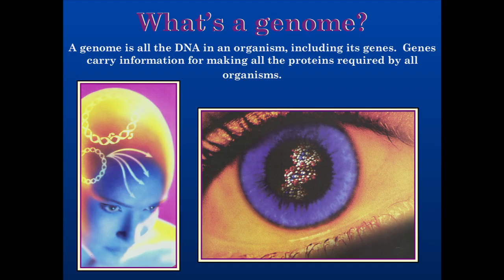Given a high-fidelity, high-speed copying machine like a cell, each copy of your genome is identical in every one of your cells. So what is a genome? A genome is all of the DNA representative of that organism, including its genes. Genes carry information for making proteins.